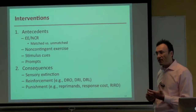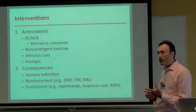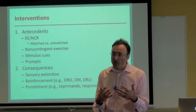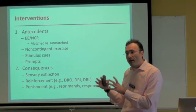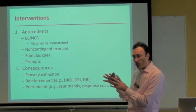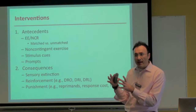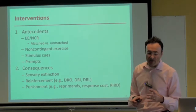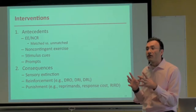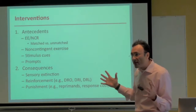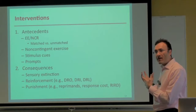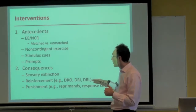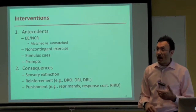For consequences, they fall into three camps: sensory extinction, reinforcement, and punishment. Extinction refers to allowing the person to emit the behavior but blocking, masking, or otherwise preventing the specific reinforcer maintaining the problem behavior. This is very difficult with stereotypy — for some problem behaviors, the reinforcer is the behavior itself, making it very difficult to separate the two. For this reason, much contemporary research has looked to differential reinforcement and punishment.